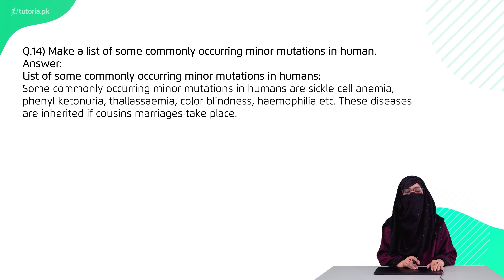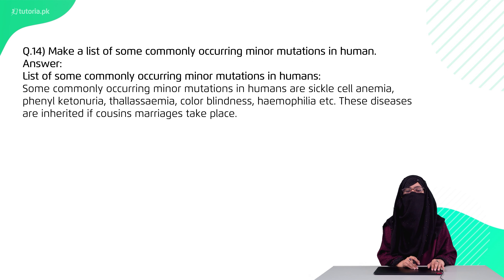Question 14 is: make a list of some commonly occurring minor mutations. Minor mutations include sickle cell anemia, phenylketonuria, thalassemia, color blindness, and hemophilia. These are all point mutation diseases, and they are mostly caused by cousin marriages.